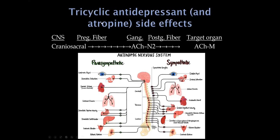Anticholinergic medications like tricyclic antidepressants (nortriptyline, amitriptyline) or atropine block muscarinic receptors in the parasympathetic system. This can cause pupil dilation and blurred vision. The most common side effect is blocking the salivary glands, causing dry mouth. Blocking the vagus nerve most often causes constipation, and blocking acetylcholine stimulation of the detrusor muscle on the bladder can cause urinary retention. These are the common side effects of anticholinergic medications.